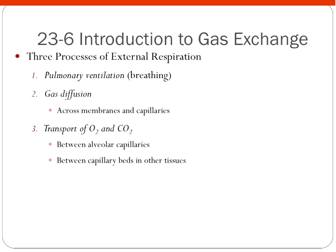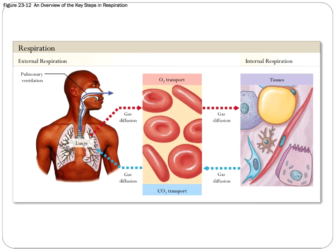There are three processes involved in external respiration: breathing, which we call pulmonary ventilation; gas diffusion, which happens across the respiratory membranes in the capillaries at those alveolar sacs; and the transport of oxygen and carbon dioxide between the alveolar capillaries, into the red blood cells, through the capillaries, and out of the red blood cells into the surrounding interstitial tissues. This is really just a pictorial representation of everything we've talked about between external and internal respiration and what it all entails.